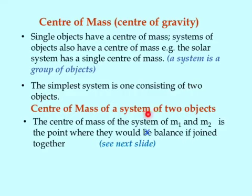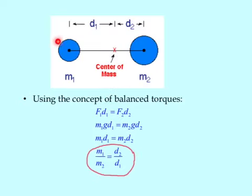The center of mass of a system of two objects, m₁ and m₂, is the point where they will balance if joined together. Here we have a system of two objects linked together by a small rod, and we can balance it at this point. If you put a fulcrum there, it will balance.